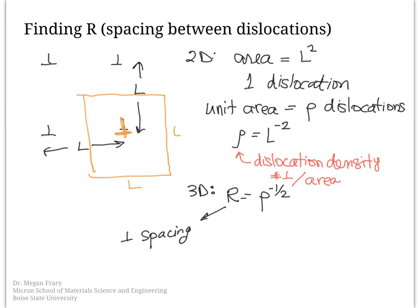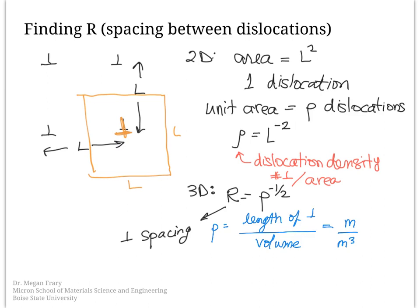In 3D, the dislocation spacing R is just equal to ρ to the negative one-half — a rearrangement of that 2D equation but now solving for R. In 3D, the units of dislocation density are length of dislocation line divided by volume — meters per meters cubed — which simplifies to meters to the negative 2, or centimeters to the negative 2.